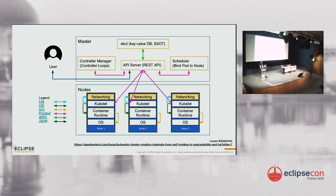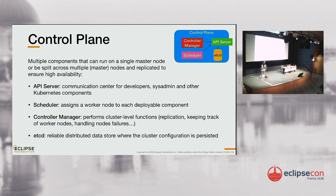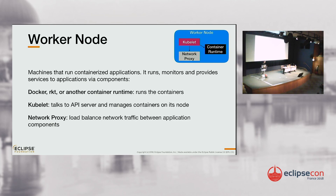Here is another, more complete architecture diagram — you can look at it later in the slides if you want to know more. The control plane has a couple of components you can run on several nodes for high availability. The worker nodes also have a couple of components. The main one is the container runtime — typically Docker, though you can use others like rkt or containerd, which use the same interface. The other worker node component is the kubelet, which communicates with the control plane and acts as the gateway between the worker and the master.